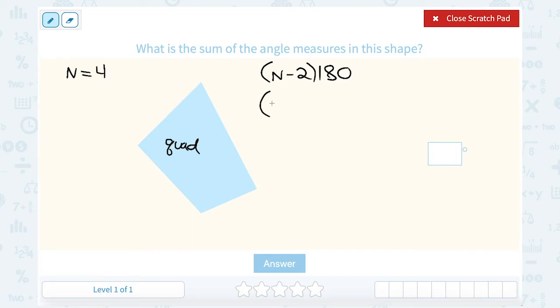If I plug that into my formula, I would say 4 minus 2 times 180 should give me the sum or the total I get when I add all four angles together. Well, 4 minus 2 is 2, and I have to say 2 times 180. 2 times 180 gives me 360. So this means that any quadrilateral has four interior angles or inside angles that add up to 360 degrees.